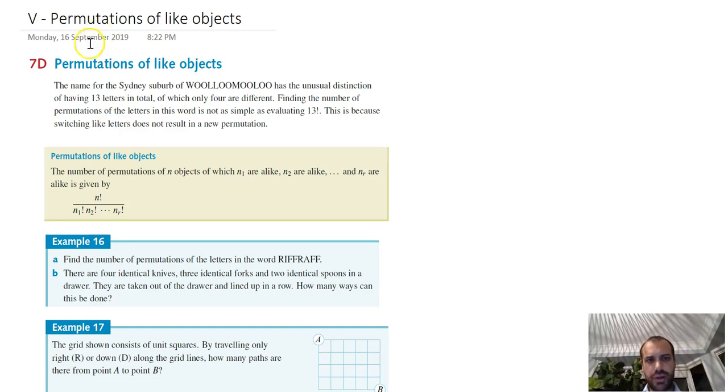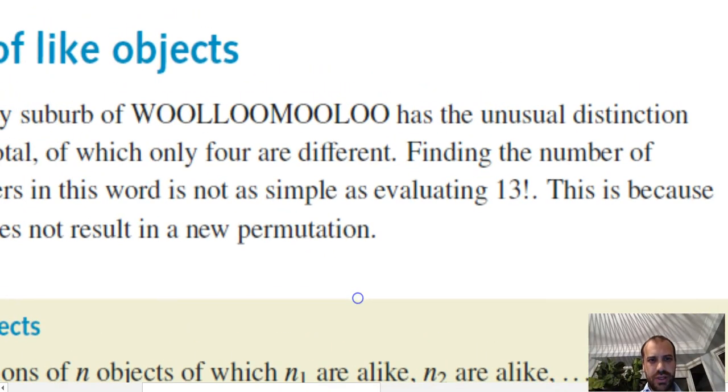Here we are for permutations of like objects. Now, this is a great Australian word, Woolloomooloo. Now, if I take this O and this O, and I take them and I switch them, you won't be able to tell the difference. If I took this O and switched it with that O, it will still read the same. It will still be Woolloomooloo.